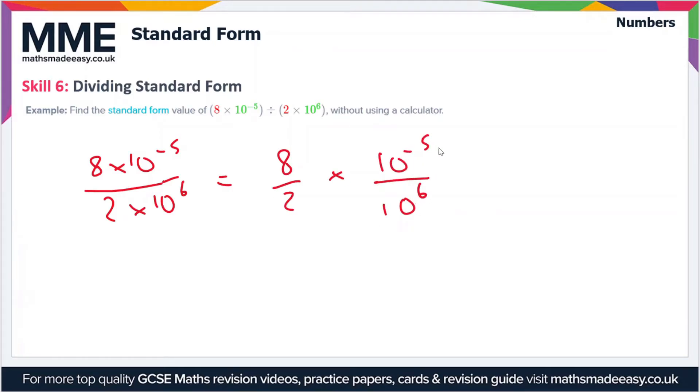When you have two values which are the same but have different powers and you're dividing them, in other words a^x over a^y, this is equal to a^(x-y).